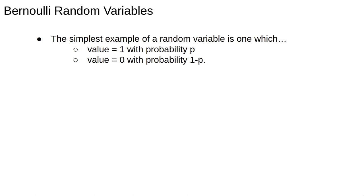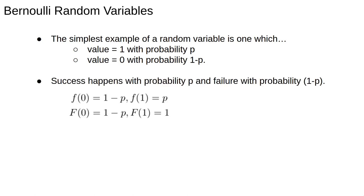For a sample space with only two possible outcomes, make sure you understand why probabilities can be written as p and 1 minus p. The probability density function and cumulative distribution function are very simple since there are only two possible values for the random variable. Pause the video if necessary and make sure you understand why these functions take the values that they do.